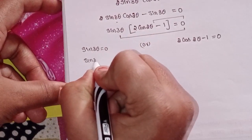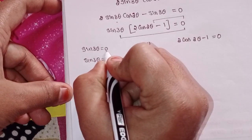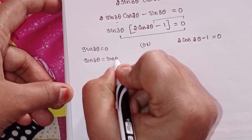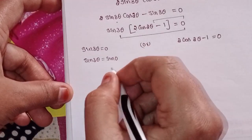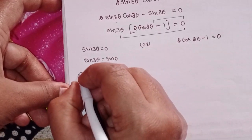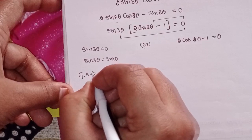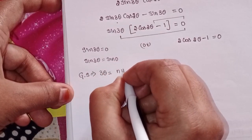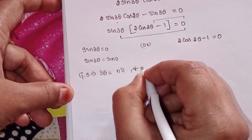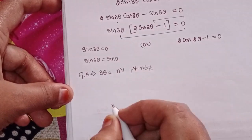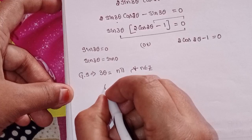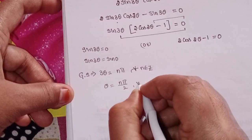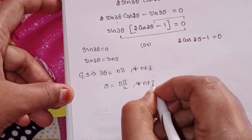Setting sin3θ = 0: sin3θ = sin0, so using the general solution 3θ = nπ, giving θ = nπ/3 for all n belonging to Z. Now substituting values of n to find solutions in the domain 0 < θ < π.